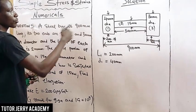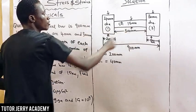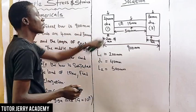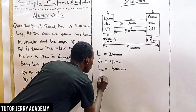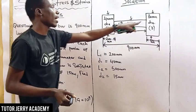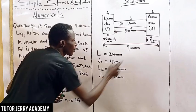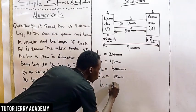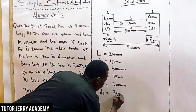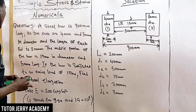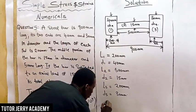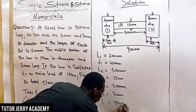Moving on to section two: the length L2 is equal to 500 millimeters, and the diameter D2 is equal to 15 millimeters. For section three, the diameter D3 is equal to 30 millimeters, and the length L3 is 200 millimeters. The overall length of the bar is 900 millimeters.